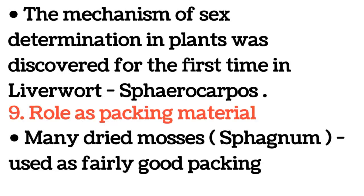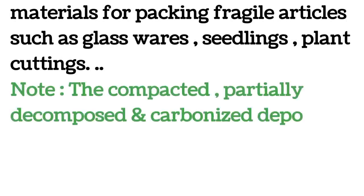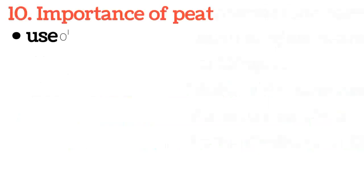Nine: role as packing material. Many dried mosses and sphagnum are used as fairly good packing materials for packing fragile articles such as glasswares, seedlings, plant cuttings, etc. Note: the compacted, partially decomposed and carbonized deposits of bryophytes are called peats.